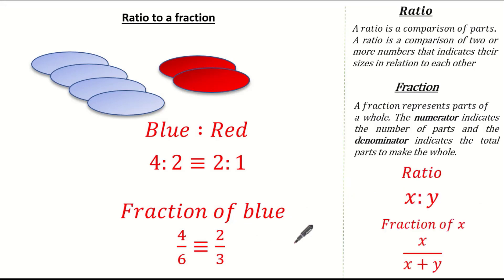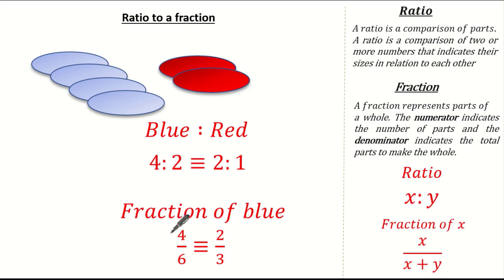Let's look at how we've written our ratio and fraction of blue counters. The ratio is four to two, and the fraction of blue is four over six. The simplified ratio is two to one, and the simplified fraction of blue is two over three.